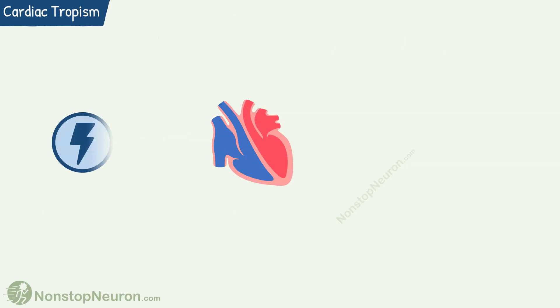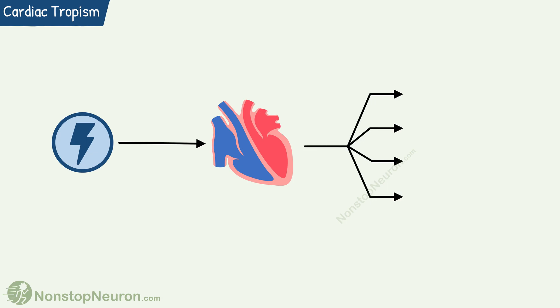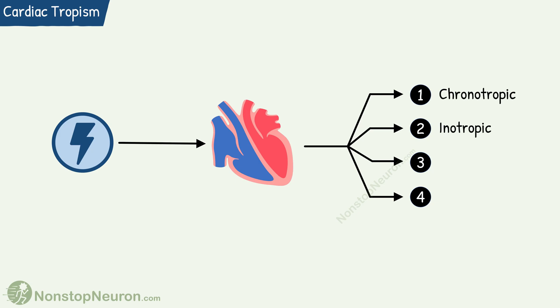Cardiac tropism describes the effect of external stimuli on the heart. The factors acting on the heart affect different parameters of heart functions, so they produce different types of changes in heart activity. These changes are broadly categorized into 4 types: Chronotropic effects, Inotropic effects, Dromotropic effects, and Bathomotropic effects.